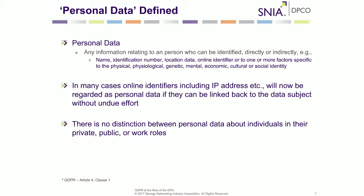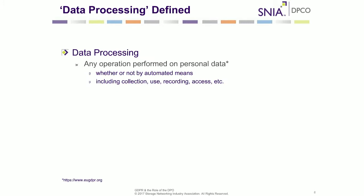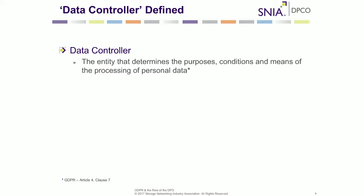Personal data is any information relating to a person which can be identified either directly or indirectly to that respective person. Interesting enough, personal data could be quite far-reaching — things like IP addresses — which brings up some interesting discussions about privacy as it relates to GDPR regulations. Another term is data processing, which is really any operation performed on personal data that's being stored. And a data controller is any entity, usually a company, that determines the purposes or conditions and means of processing personal data.